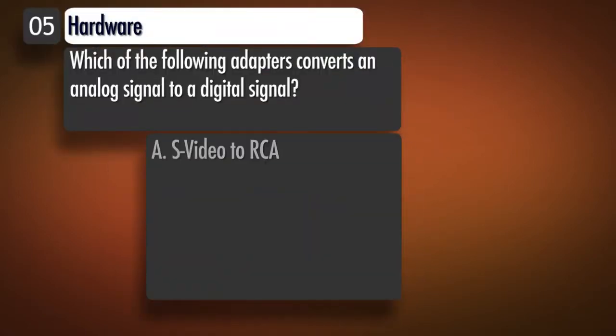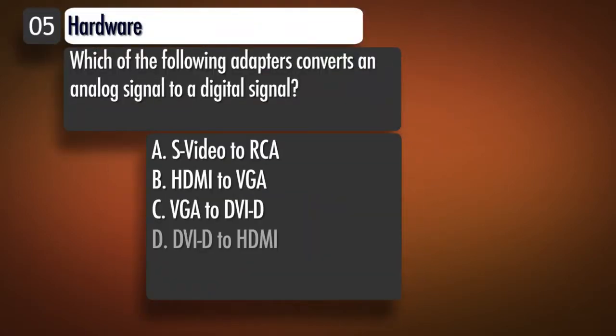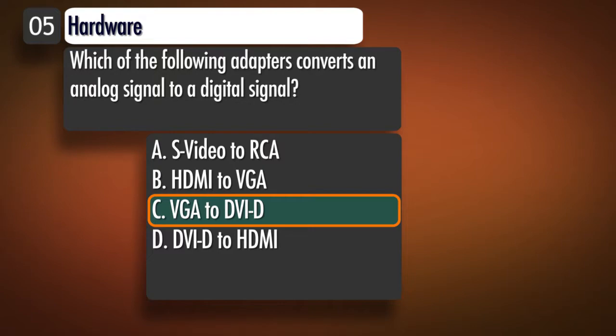Question 5, Topic 1. Which of the following adapters converts an analog signal to a digital signal? A. S-Video to RCA B. HDMI to VGA C. VGA to DVI-D D. DVI-D to HDMI. Correct answer: C.